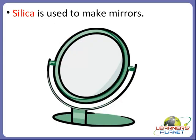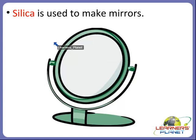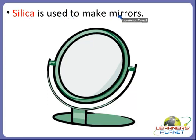You must have seen the mirrors in your home — you see your face in the mirror. So what is a mirror actually made up of? It is made up of a type of mineral, and that mineral is silica. Silica is a mineral which is used to make mirrors so that we can see ourselves in the mirror.